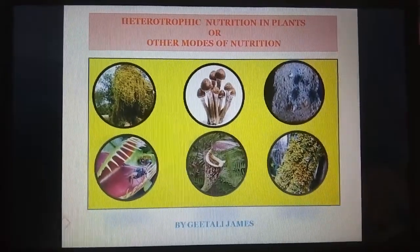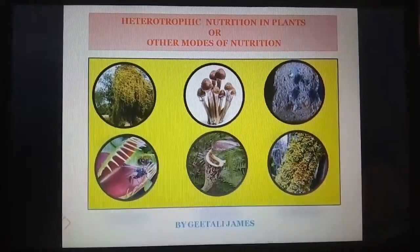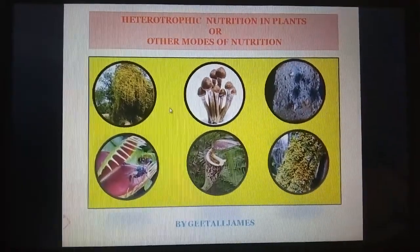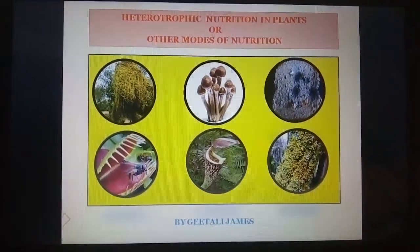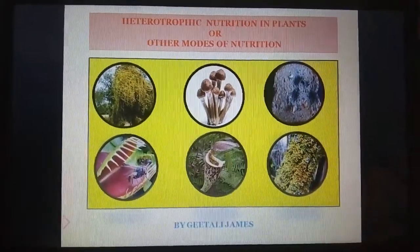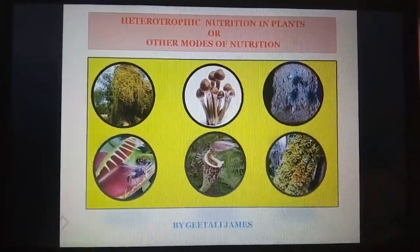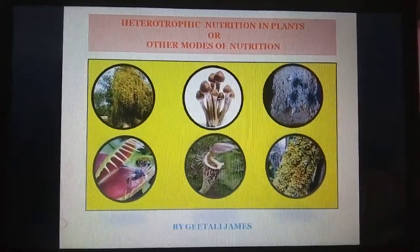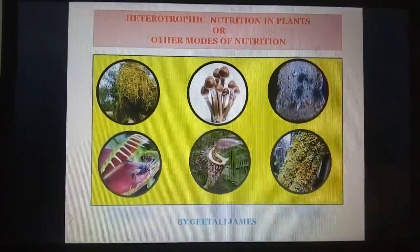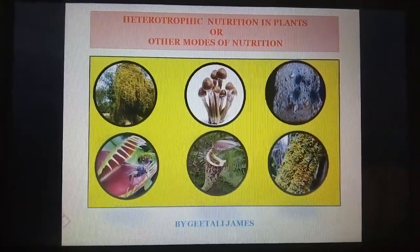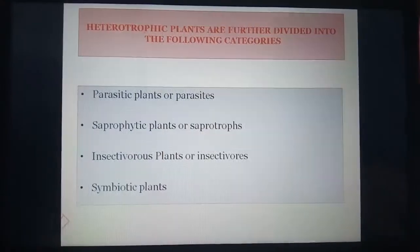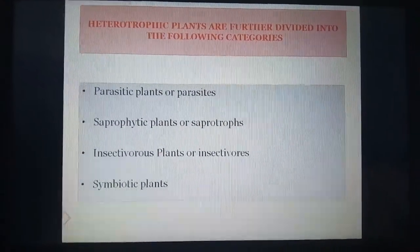There are certain plants which cannot synthesize their own food, as they do not have chlorophyll or they do not get the appropriate nutrients for their growth. These plants depend on other organisms for food and are called heterotrophs. They therefore exhibit heterotrophic mode of nutrition. Heterotrophic plants are further divided into the following categories.